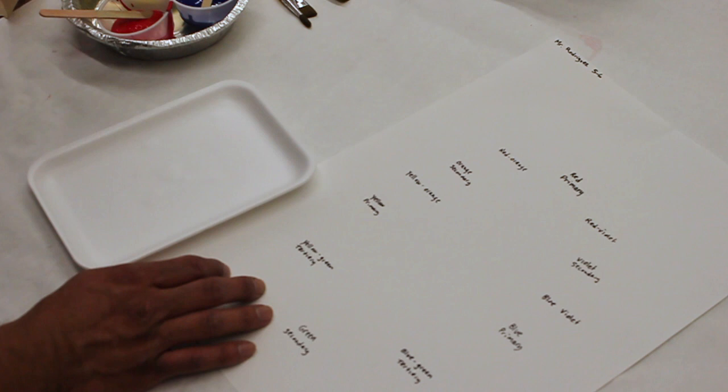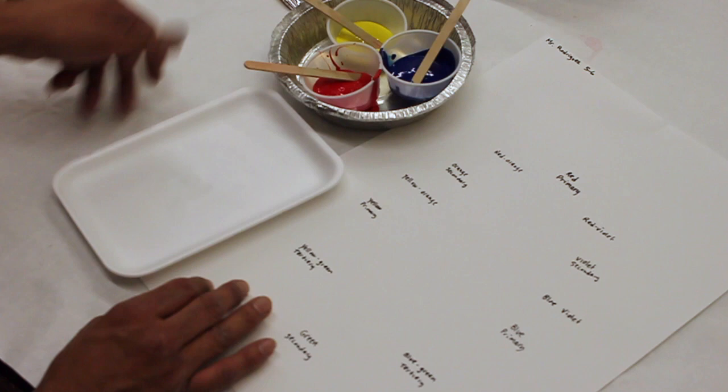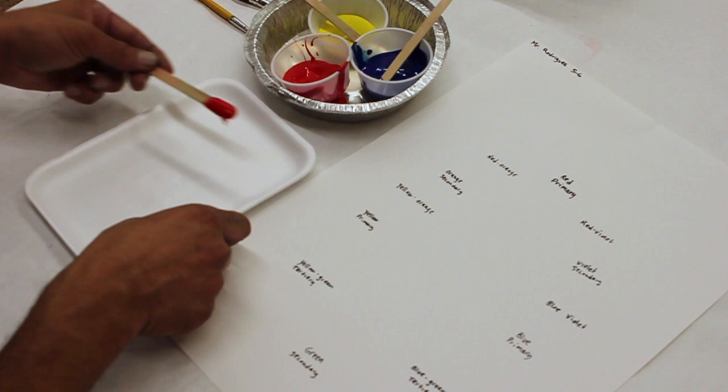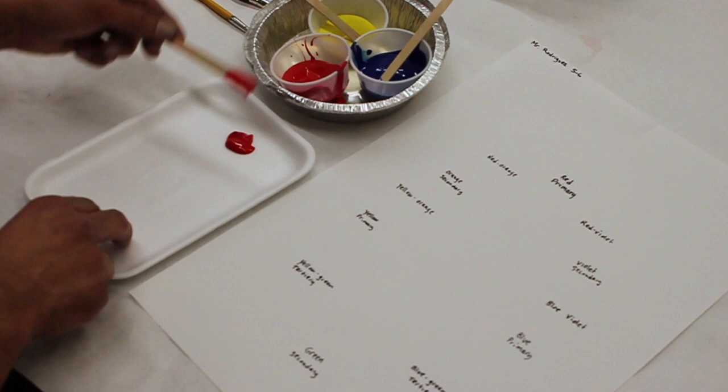We're going to mix a 12-color color wheel using only the three primary colors. What we're going to do is we're going to start with the primary colors which are red, yellow, and blue. I'm going to use the sticks like paint and I'm going to position these in the same position that I have them on my paper just to kind of keep everything the same.